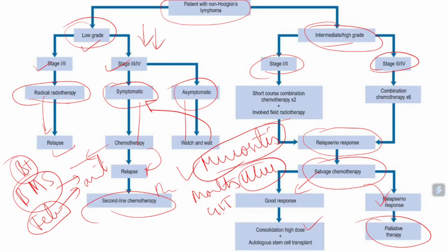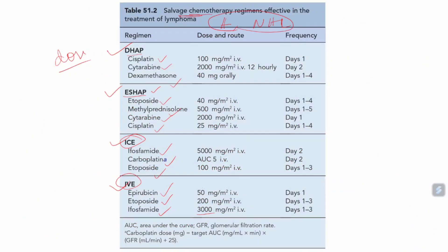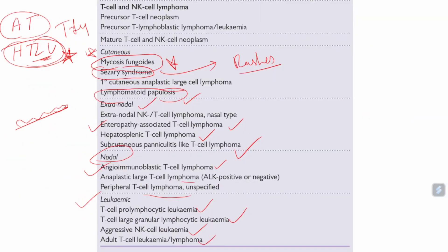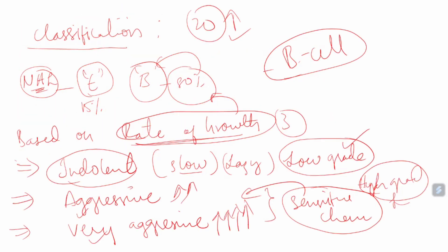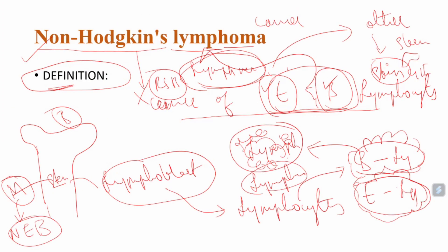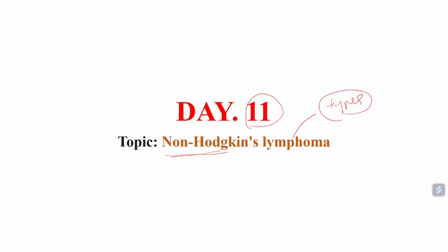Non-Hodgkin's lymphoma is a very confusing topic with many types, but we have covered the different types and treatment strategies. Watch this lecture two or three times to understand the names and types. Treatment strategies are followed based on the type of NHL. We will continue with clinical cases in the next class. Thank you all for watching.